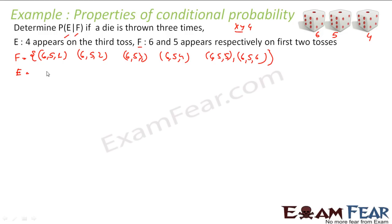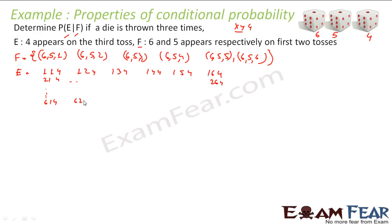For event E, the third number is fixed as 4 and the first two can be any of 6 values each, giving 6 × 6 = 36 elements. For event F, there are 6 elements as listed. The total sample space has 6 × 6 × 6 = 216 elements.